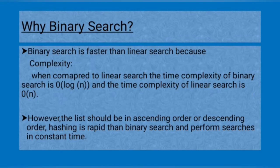Why binary search is used: binary search is faster than linear search because the time complexity of binary search is O(log n) and the time complexity of linear search is O(n). However, the list should be in ascending order or descending order. Hashing is more rapid than binary search and it performs searches in constant time.